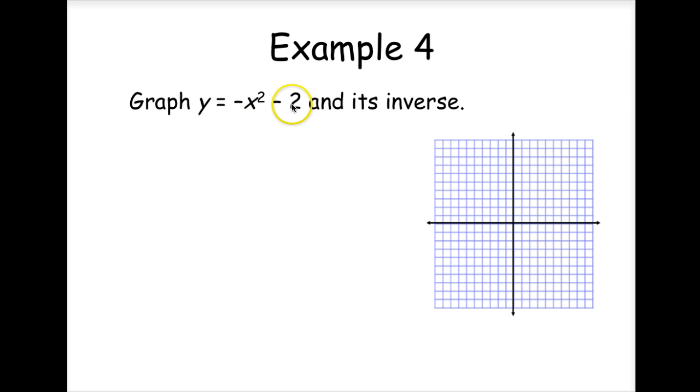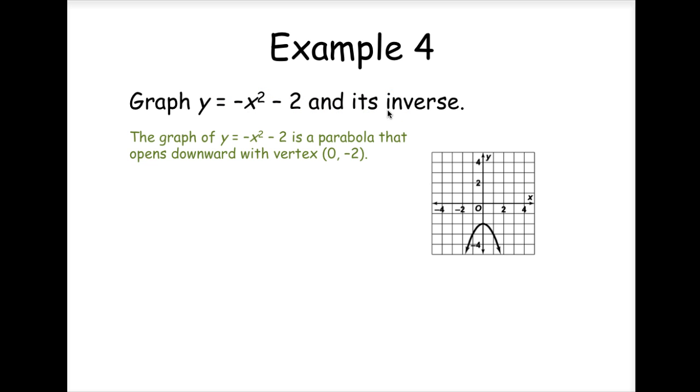Graph y is equal to negative x squared minus 2, and its inverse. So the graph of y is equal to negative x squared minus 2 is a parabola that opens downward with a vertex at 0, negative 2. The reflection of the parabola in the line x equals y, this is the line, is the graph of the inverse. So if this were a piece of paper and we were to fold it along this line, this would reflect right onto this one.